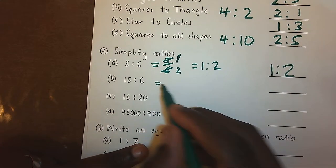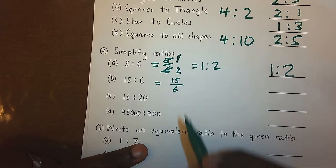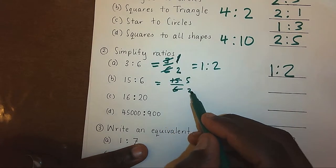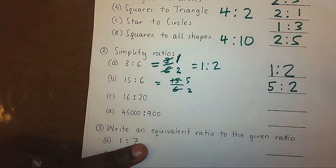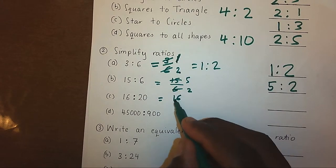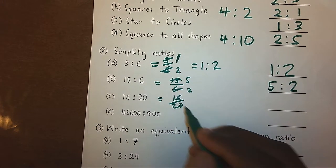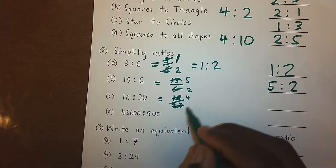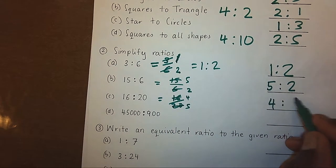Same with 15 over 6, divide by 3, we get 5, divide by 3, we get 2, giving us 5 ratio 2 as the simplest. Next, 16 over 20, divide by 4, we get 4, divide by 4, we get 5, meaning 4 ratio 5.